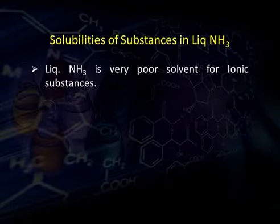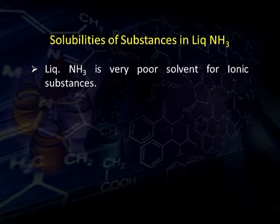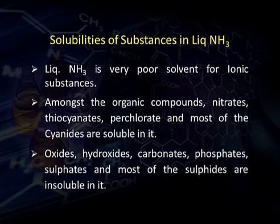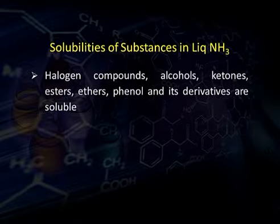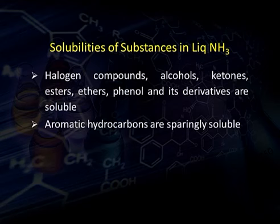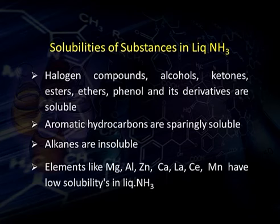Liquid ammonia is a very poor solvent for ionic substances. Nitrates, thiocyanates, perchlorates, and most cyanides are soluble. Oxides, hydroxides, carbonates, phosphates, sulfates, and most sulfides are insoluble. Most iodides are soluble; bromides are less soluble. Fluorides and chlorides (except those of beryllium and sodium) are practically insoluble. Halogen compounds, alcohols, ketones, esters, ethers, phenols and derivatives are soluble. Aromatic hydrocarbons are sparingly soluble, alkanes are insoluble, and elements like magnesium, aluminium, zinc, calcium, lanthanum, cerium, and manganese have low solubilities.